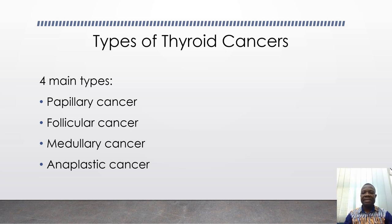Papillary cancer arises from the follicular cells of the thyroid gland. They are the most common type of thyroid cancers, constituting about 80% of cases. They spread slowly, and they are common among the younger age groups.